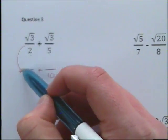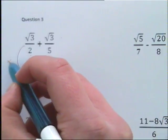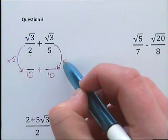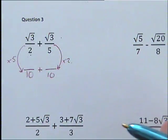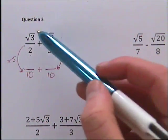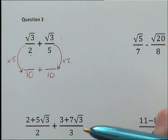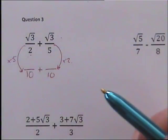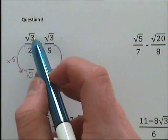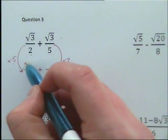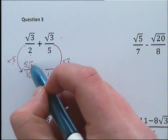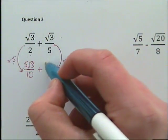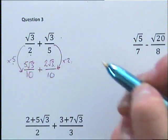What do we have to times this 2 by to get this 10? We had to times it by 5. What did we have to times this one by? We had to times it by 2. So we have to do the same to our top number — our thirds in this instance. So root 3 times 5 gives 5 root 3. Root 3 times 2 gives 2 root 3.